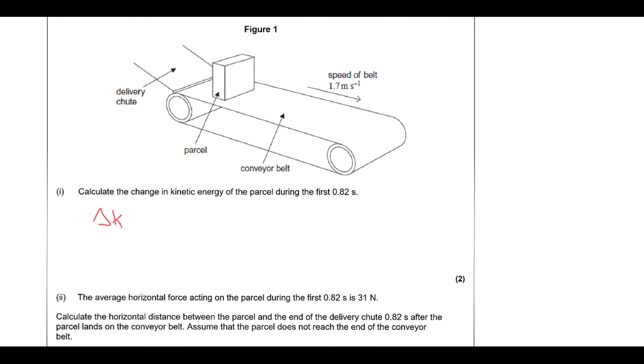Calculate the change in kinetic energy. So first of all, change is always final minus the initial. So it's going to be half mass, essentially the change in the square of the velocities. But the initial velocity is zero, so we can cancel that, so it's just going to be half times 15 times 1.7 squared. So let's calculate that. That's 21.675, so it's 22 joules of kinetic energy there. Okay, so that's the change in kinetic energy.